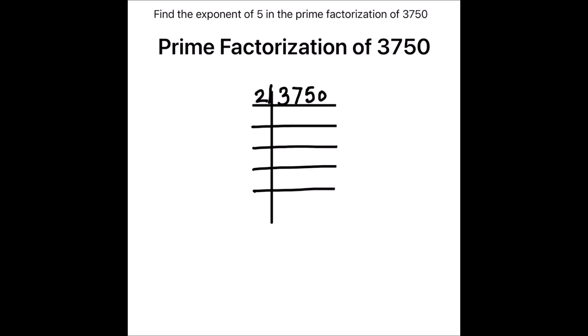We'll use 2 to divide. Working through the long division: 3750 divided by 2 gives 1875. Now 1875 is an odd number, so it is not divisible by 2. We'll use the next prime number, which is 3, to divide this number.